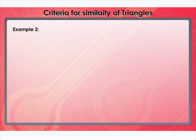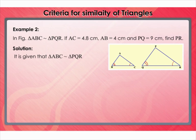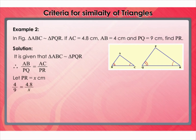Let's move to another example. In the figure, triangle ABC is similar to triangle PQR. If AC equals 4.8 cm, AB equals 4 cm, and PQ equals 9 cm, find PR. Solution: It is given that triangle ABC is similar to triangle PQR. Therefore, AB/PQ equals AC/PR. Let PR equal x cm. Then 4/9 equals 4.8/x, so 4x equals 9 times 4.8, giving x equals 10.8. Therefore, PR equals 10.8 cm.